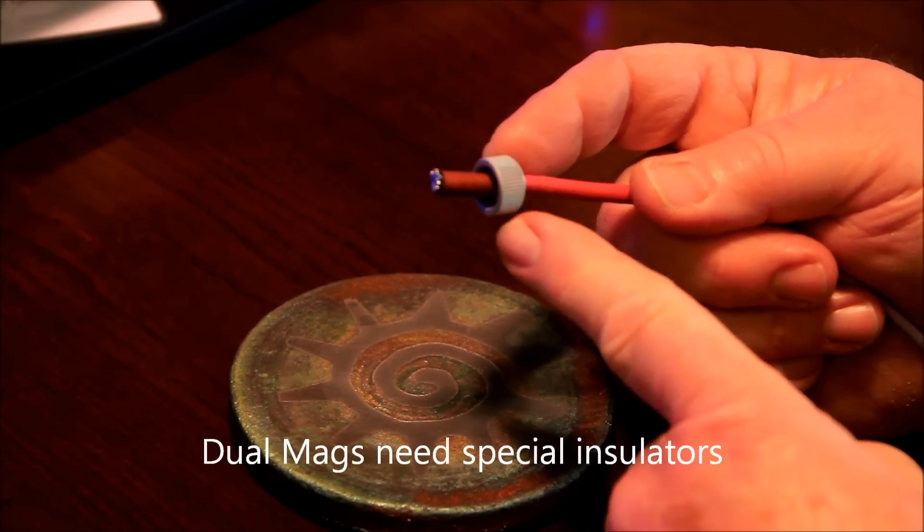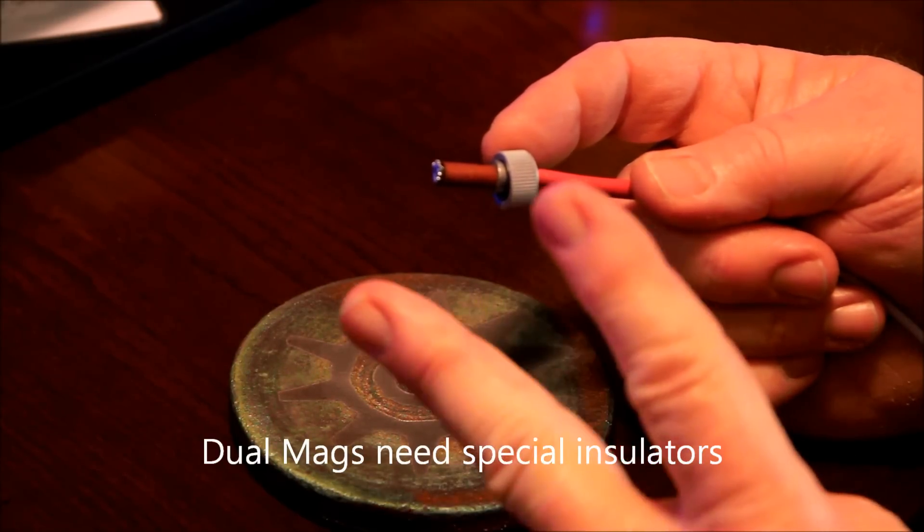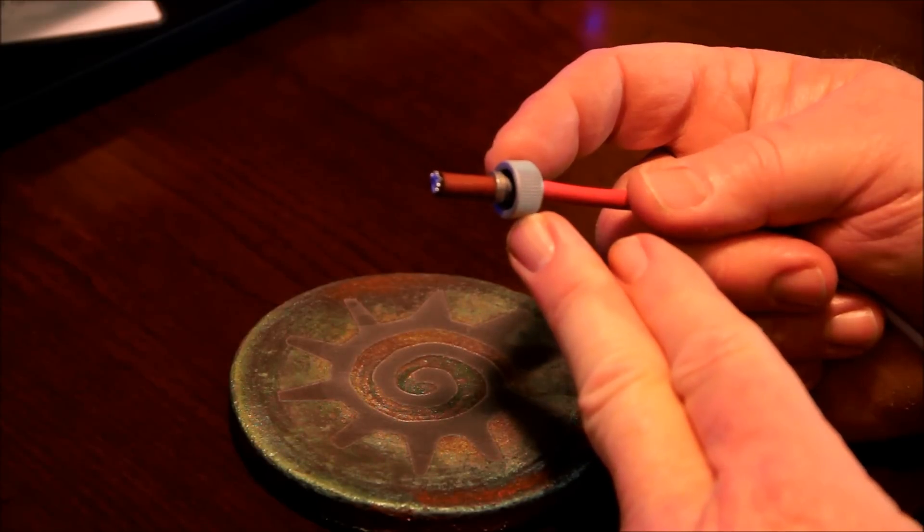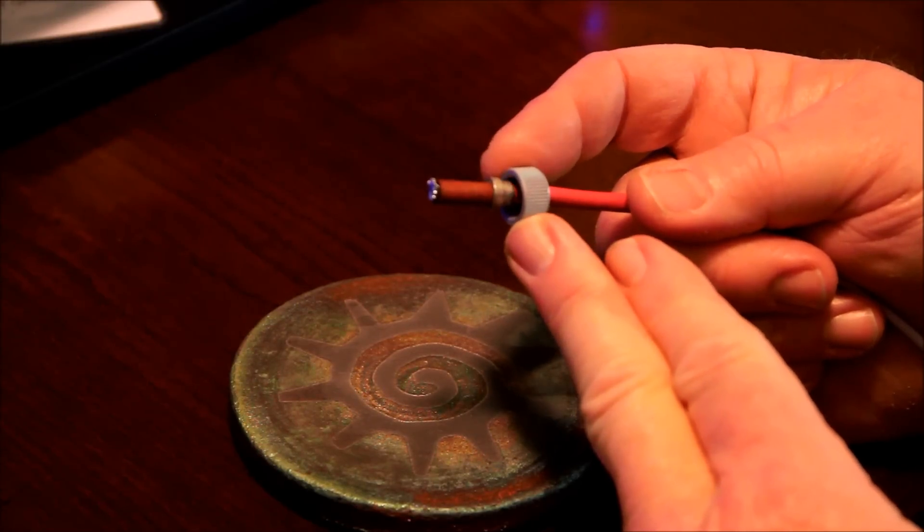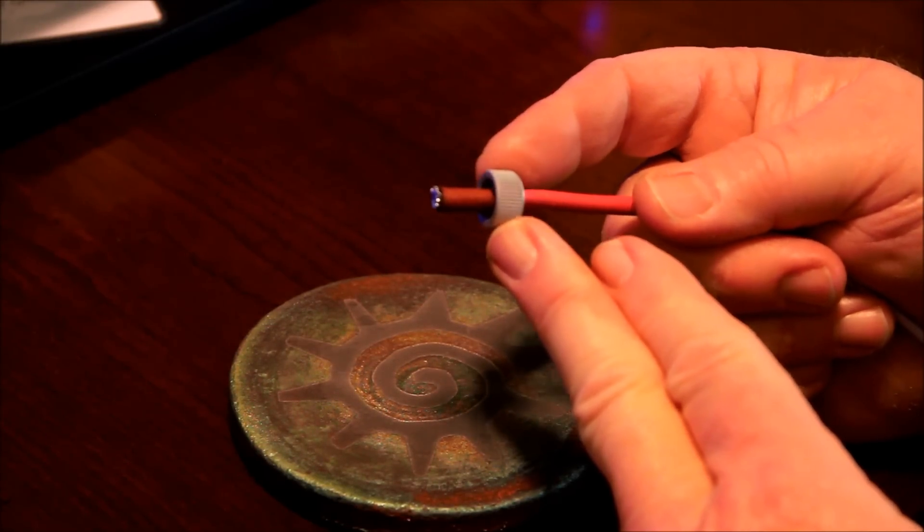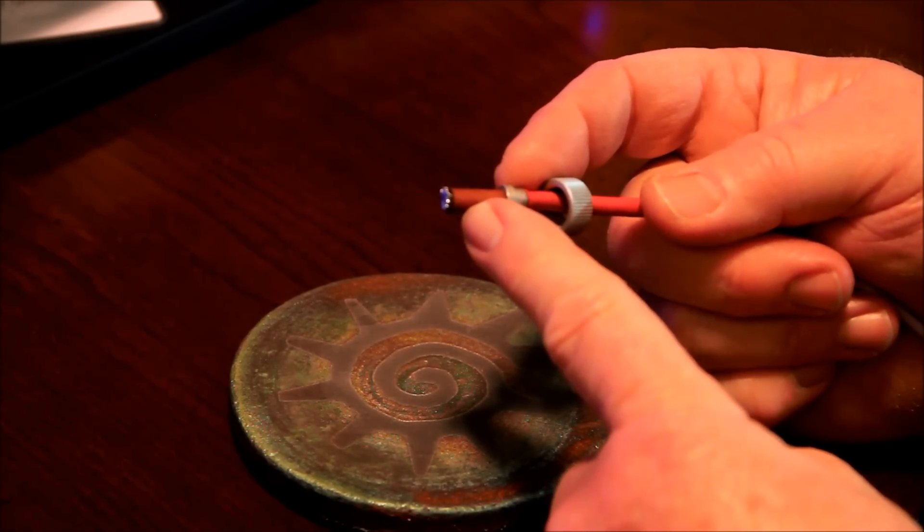So if you have one of those magnetos that is one of the dual configurations, two magnetos in one, I'll show you another picture of that. Then you need to tell us that you've got a D2000 or D3000 series, a dual mag, and we'll make sure to use the proper insulators when setting up the P-leads.